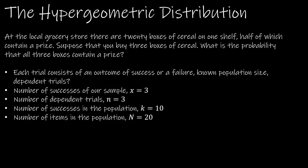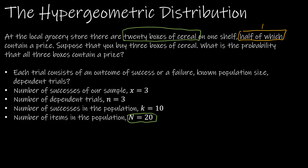At the local grocery store, there are 20 boxes of cereal on one shelf, half of which contain a prize. Suppose you buy three boxes of cereal — what's the probability that all three boxes contain a prize? There are 20 boxes of cereal, so that's the total population; N is 20. Half of those contain a prize, and half of 20 is 10, which is the number of successes in the population.